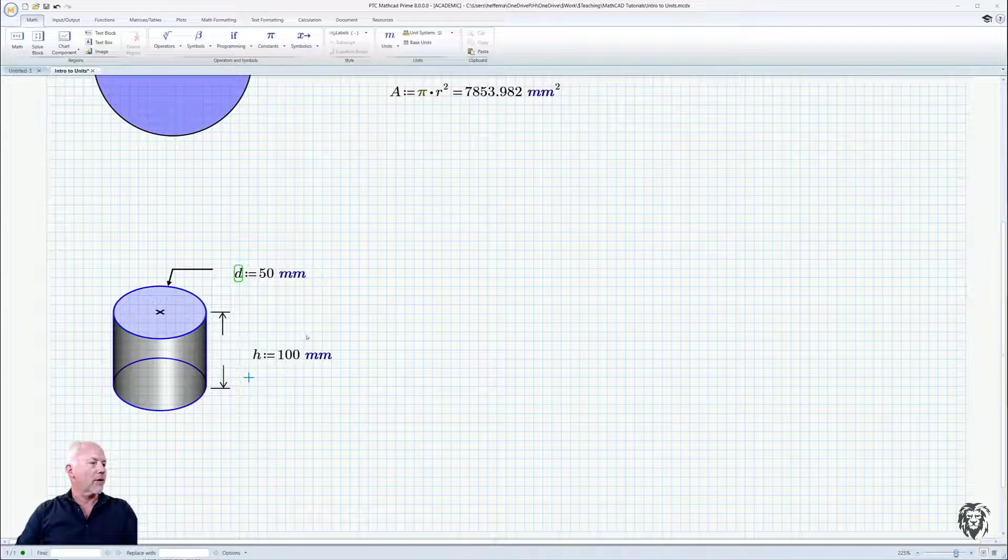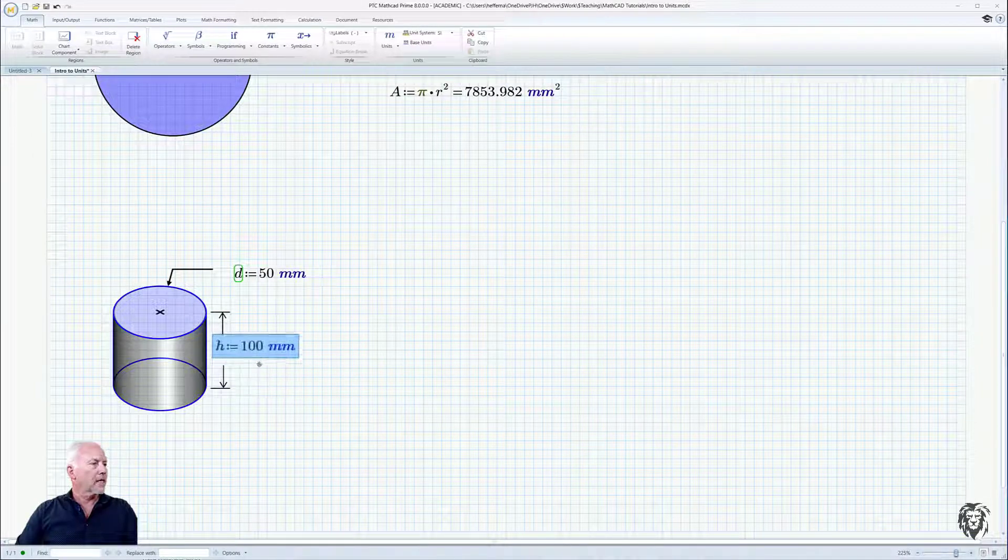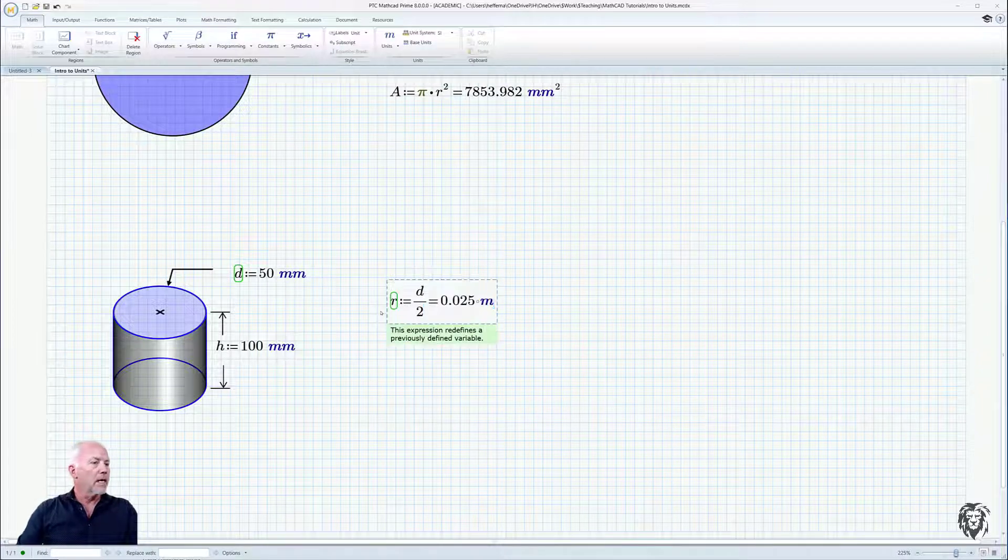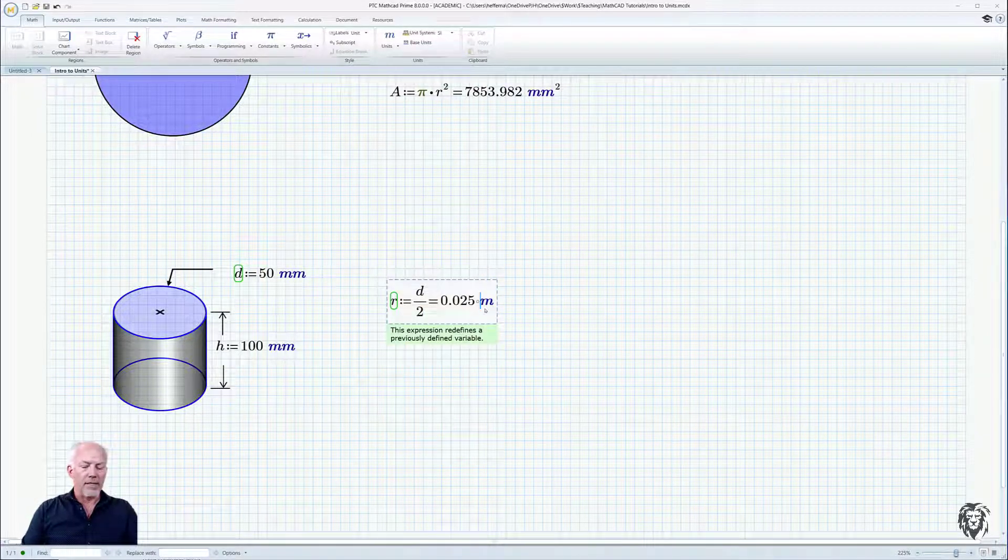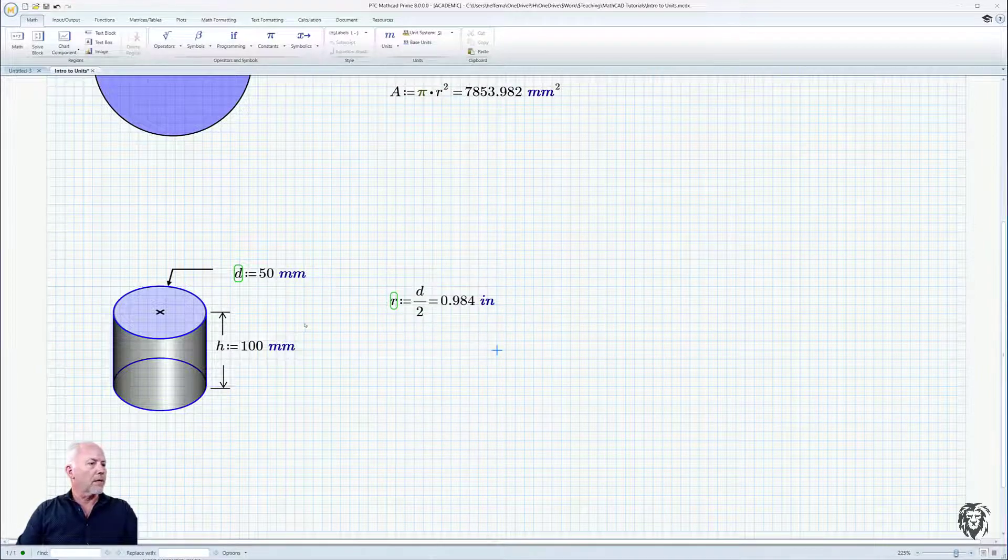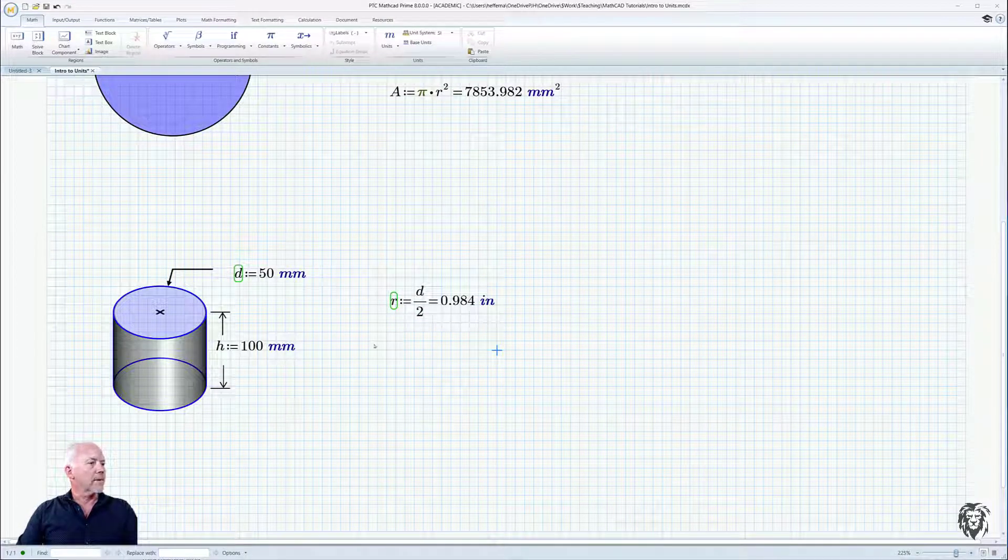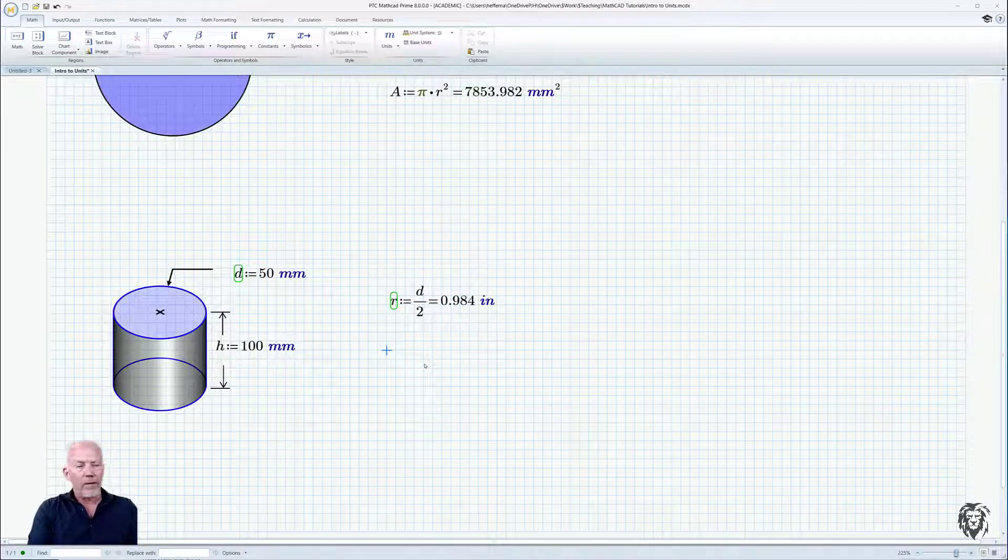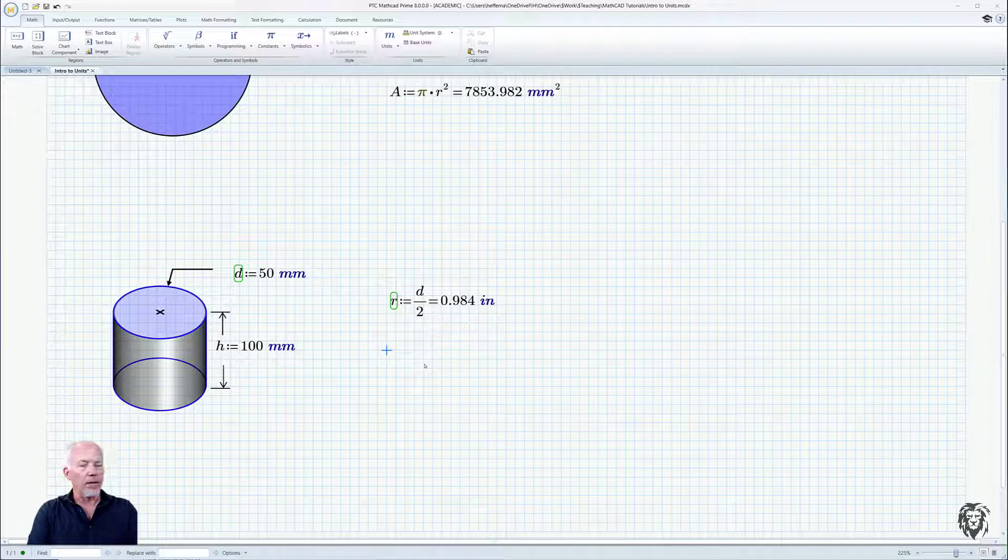Remember, I'm using that colon button for definition. And again, we can do our radius equal to d divided by 2. And again, it recognizes it as meters. But let's say we want all of our results, even though our input is in millimeters, let's get all of our output in U.S. customary units or imperial units.